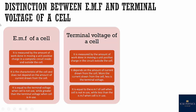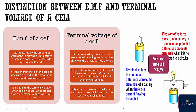What is the difference between EMF and terminal voltage? EMF is measured by the amount of work done in moving a unit positive charge in a complete circuit — inside and outside the cell — while terminal voltage is only outside the cell. EMF is a characteristic of the cell and does not depend on current, while terminal voltage depends upon current: more current drawn means less terminal voltage. EMF is always greater than terminal voltage when the cell is in use. Both are measured in volts. EMF is the maximum potential across the terminals when not connected to a circuit, while terminal voltage is the potential difference when current is flowing.